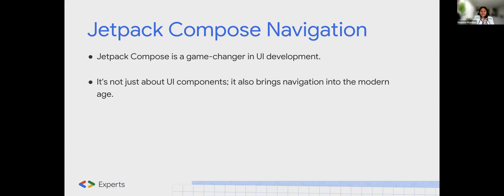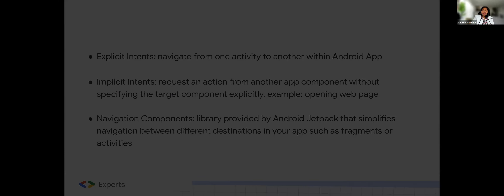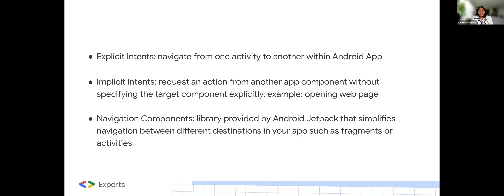Jetpack Compose navigation is a game changer in UI development, and it's not just about UI components. It also brings navigation into the modern age, which is super exciting. Jetpack Compose navigation also brings all the benefits of the Jetpack Components library to Compose, and it simplifies navigation and handles complex routing. Now, let's talk about common types of navigations. We have explicit intent, implicit intent, and navigation components.